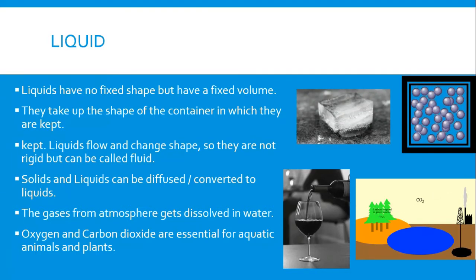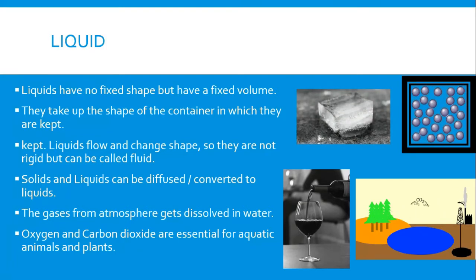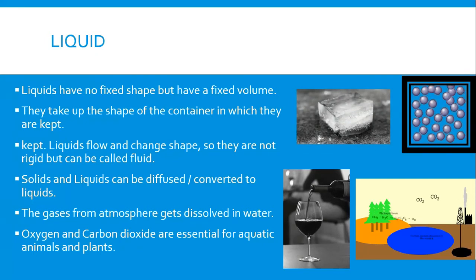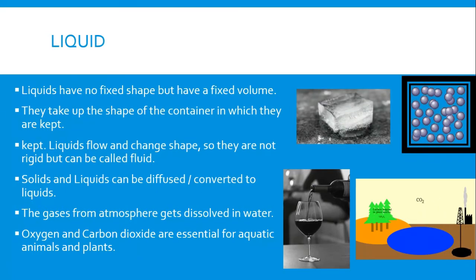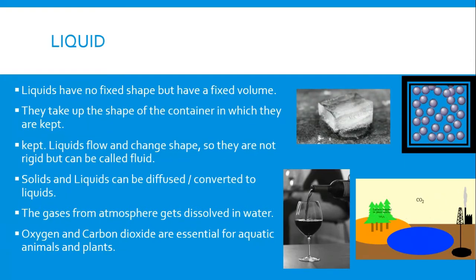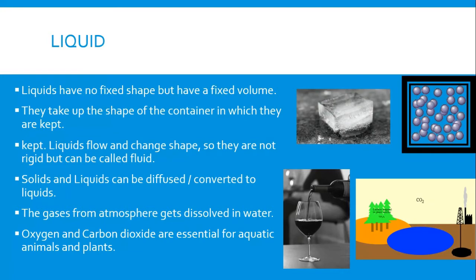Liquid does not have any fixed shape, but it has a fixed volume. Liquids can take the shape of any container they are kept in. If you keep water in a jug, it takes the shape of the jug. As you can see in the image, wine poured from a bottle into a glass changes its shape. Liquids can flow and change their shape, so they are not rigid — they can be called fluids.